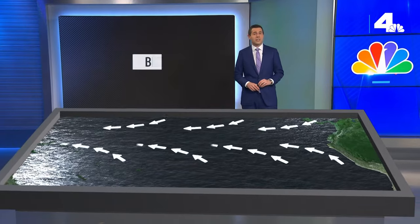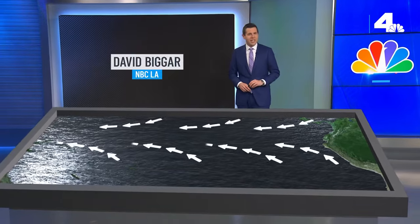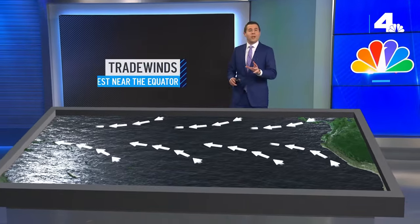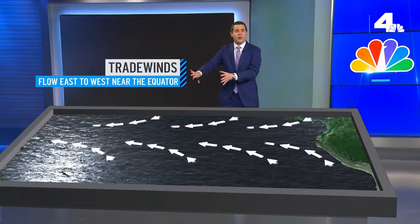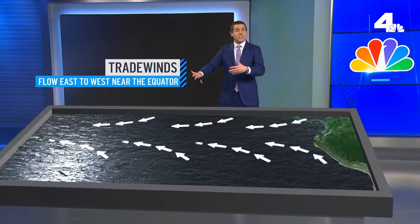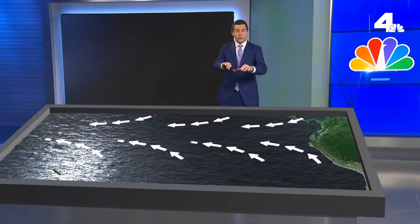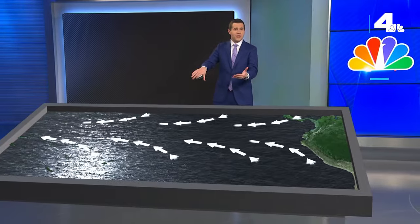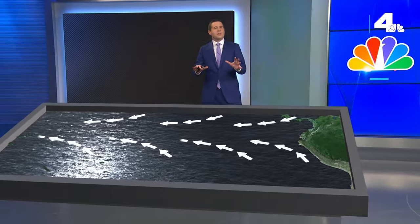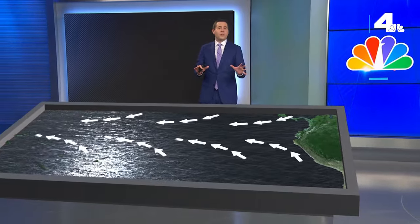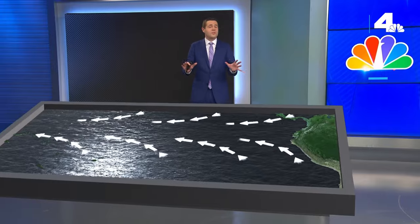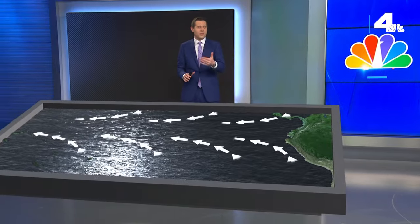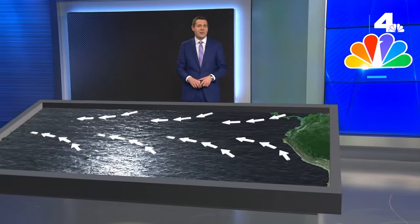Before we talk about what El Niño is, we have to cover two related topics: trade winds and upwelling. Trade winds are winds that flow from east to west near the equator. As the wind blows towards the equator, its direction is bent towards the west because of the rotation of the earth. Sailing ships have taken advantage of this cross-ocean wind direction for hundreds of years, creating trade routes, which is where the winds get their name.